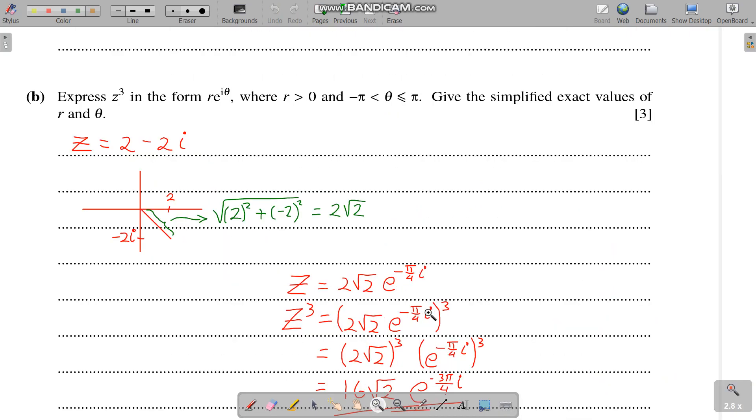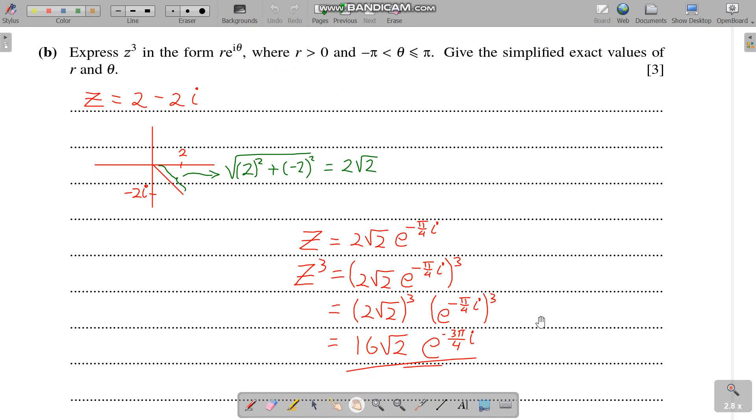Express z cubed in the form of the exponential form r e to the i theta. I'm using the principal axis and positive r of course. So z is again 2 minus 2i from the previous part. Just draw the Argand diagram: 2 minus 2. If you want to find the hypotenuse or the modulus, just use Pythagoras and you get 2 root 2. So this is the exponential form of the same z complex number here.